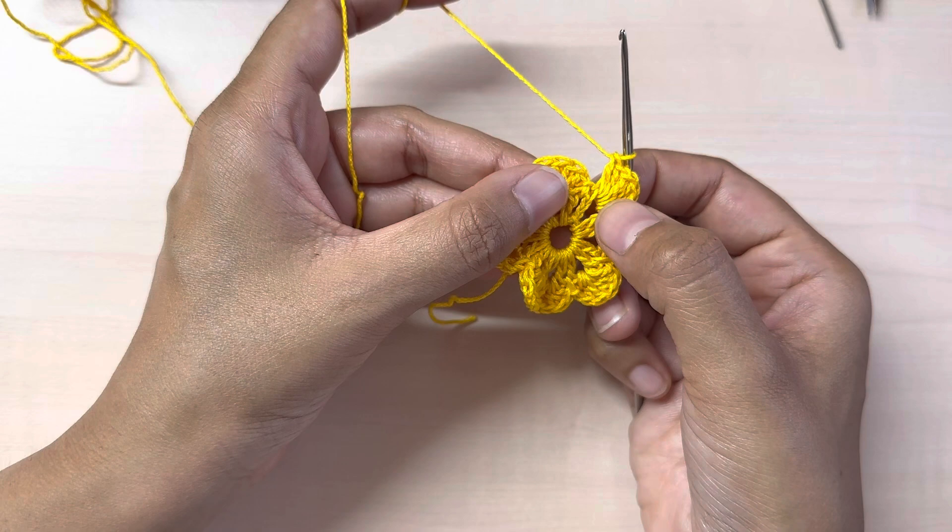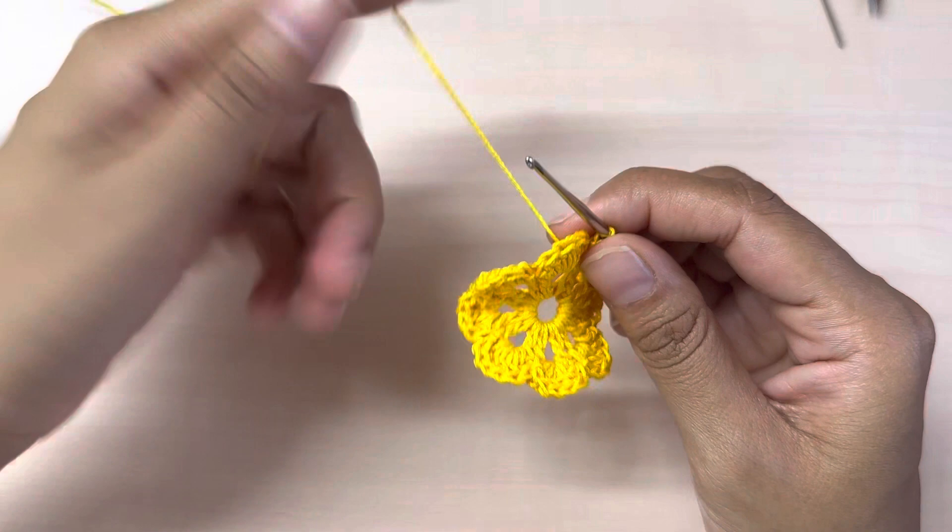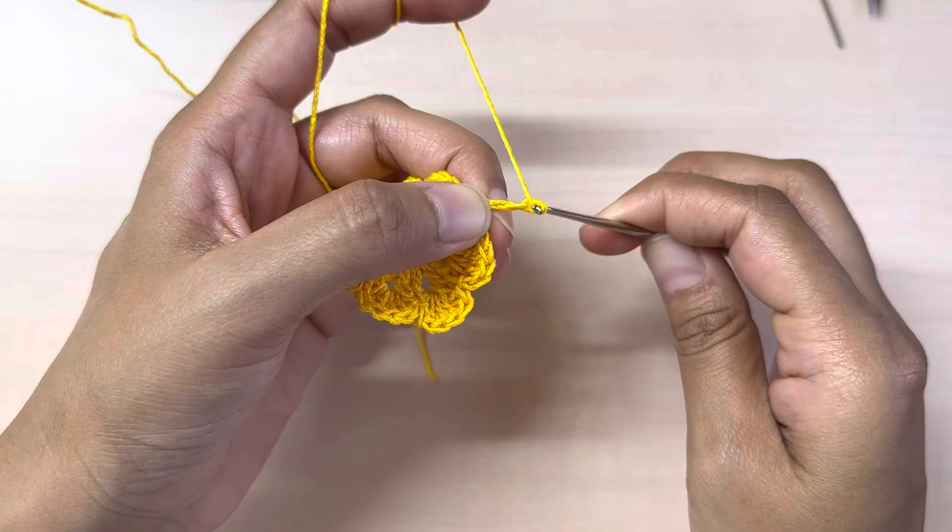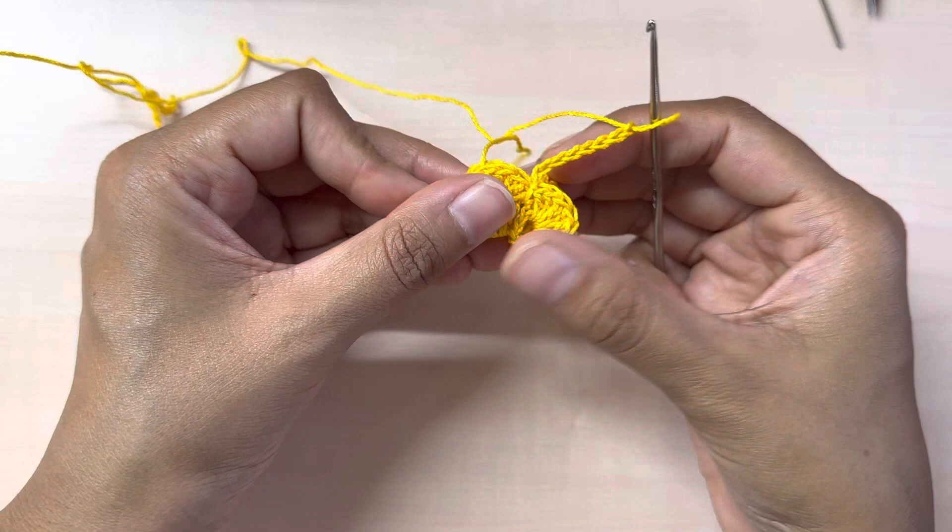I've just completed my last six double crochets into the chain two space. I'm going to slip stitch right into the space. Now I will make eight chains, one two three four five six seven eight, and fold my butterfly with my right side outwards.